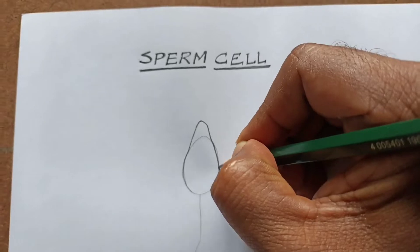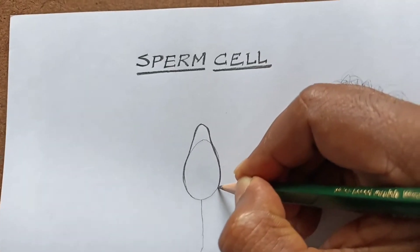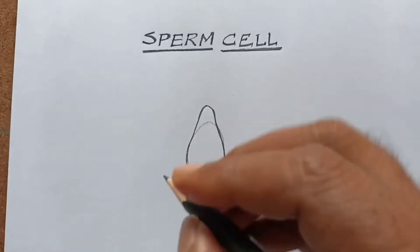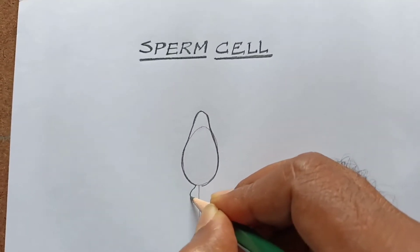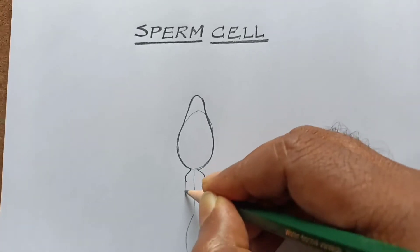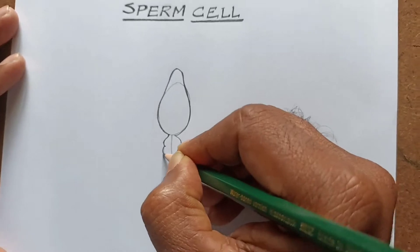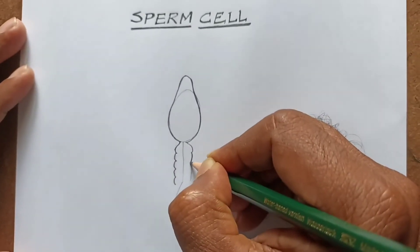I'm giving shape to the head. You draw like this. This is the neck and middle piece. Now I'm drawing the middle piece. First I'm giving the outline. You draw like this.